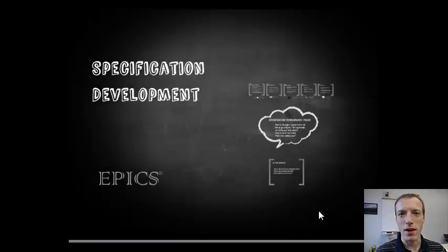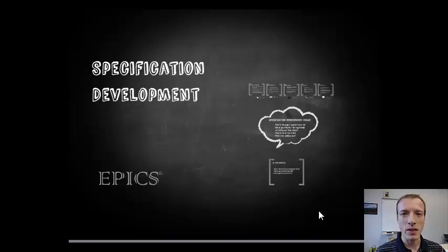Hi, I'm Andrew Pierce again with EPICS at Purdue, and in this module we're going to talk about specification development. Specification development is the second phase in the EPICS design process, and it's really the foundation for all of the design activities we do from this point forward. Specification development will be the last phase where you feel like you're still trying to figure out what the problem is, and really start a transition into finding solutions.